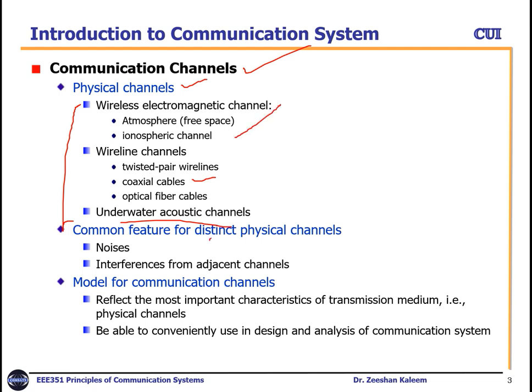The common features of distinct physical channels include noise and interference from adjacent channels. Noise in general means interference as well, but specifically for communication systems, noise usually refers to what occurs on the receiver side. For example, heat in devices will disturb the communication system on the receiver side — we call this thermal noise. Other disturbances are called interference, and when the interference is from the adjacent channel, it is called adjacent channel interference.